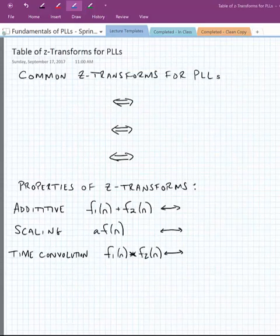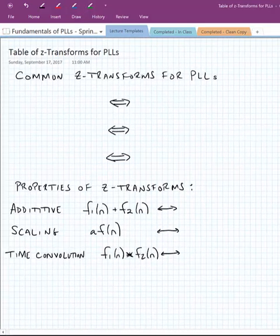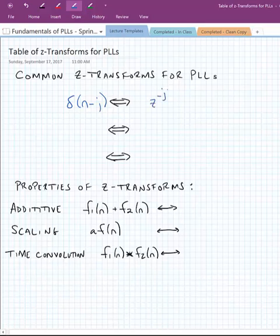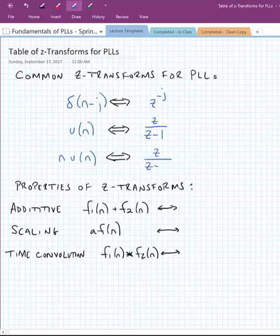We'll look at a few of the common types of transforms that we'll see in phase-lock loops. So one that we might see would be an impulse function, delta of n minus j. And this has a z transform of z to the minus j. We've already seen the unit step, u_sub_n. And we know that this is equal to z over z minus 1 in the z domain. And we might have some unit step multiplied by the step. And of course, these are just a few examples from a table that we might build, or you can find many of these tables on the internet.